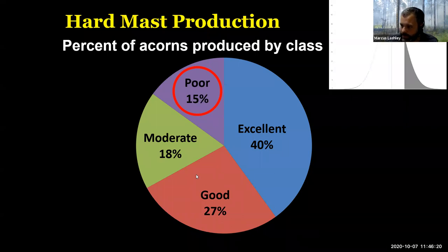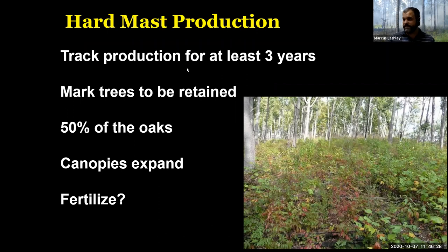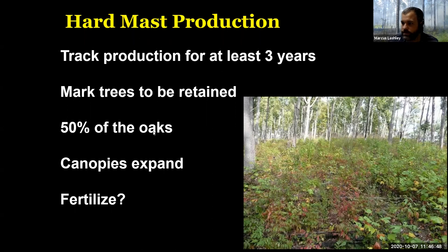In the long-term study we just published on this, we figured out that because this is a genetic trait, it didn't matter what the canopy position was, how big the tree was, the size, the form — anything you could look at about the tree did not matter in terms of whether or not it was a good producer. But if you track production for three years, you could basically assign it to good or poor.